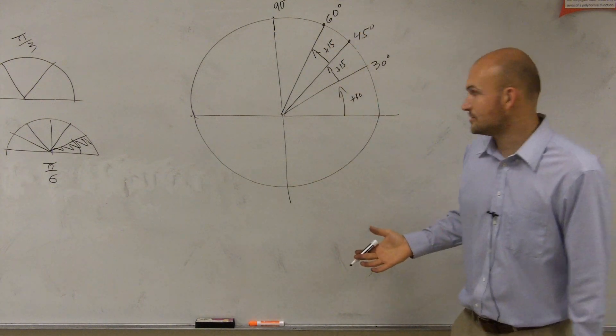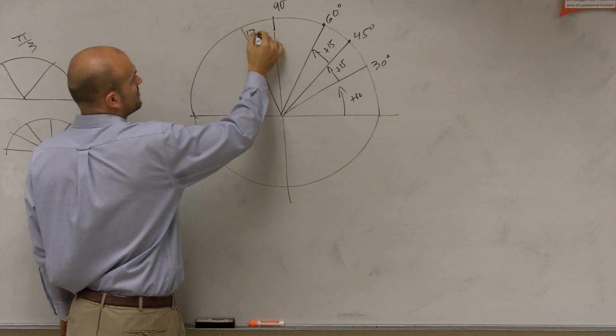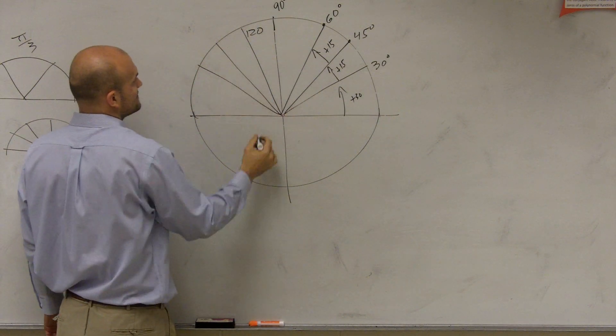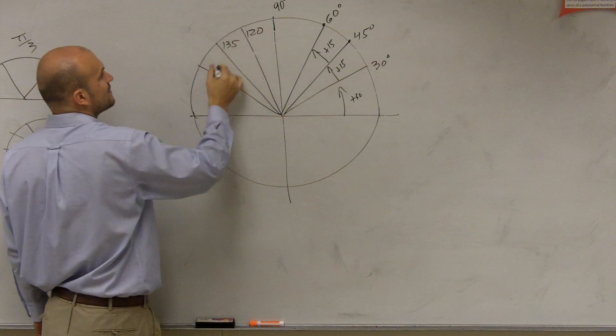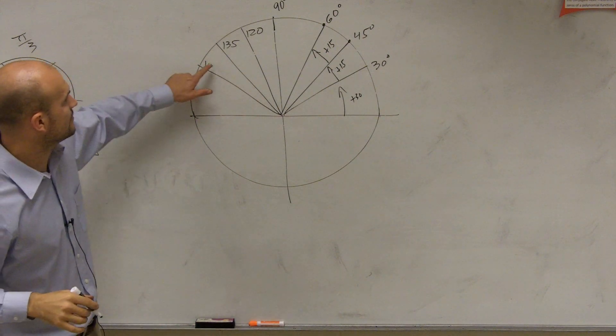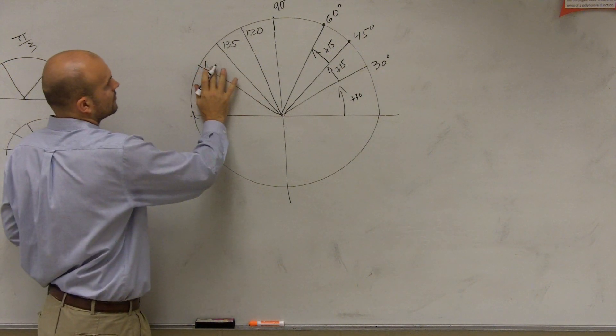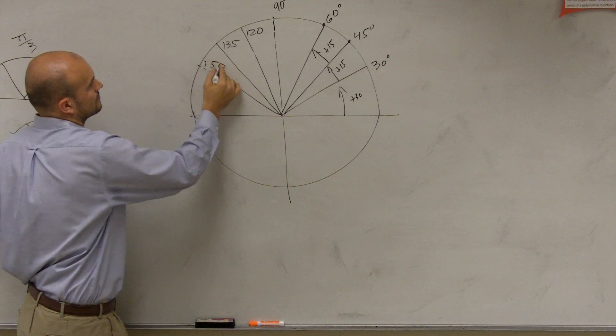So first thing I would do is just kind of go, first one is to add your 30, so this is going to be 120, and then add 15, add 15. So you add 15, it would be 135, and then add 15 again, you're going to get 150.